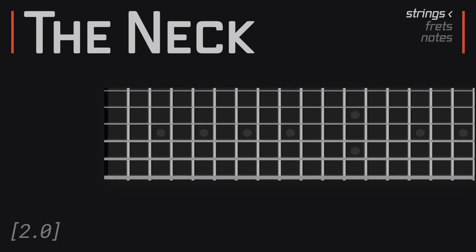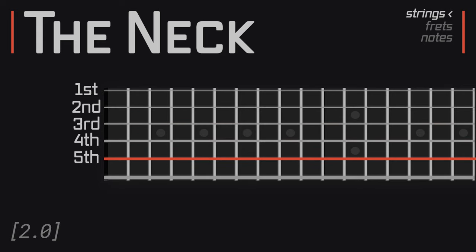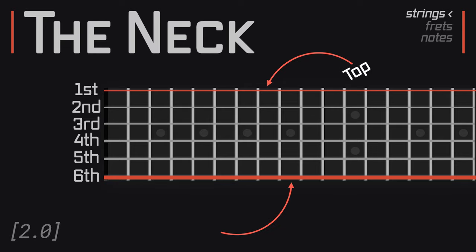In summary, here are the strings on the guitar: first, second, third, fourth, fifth, and sixth. This is the top string, this is the bottom string.